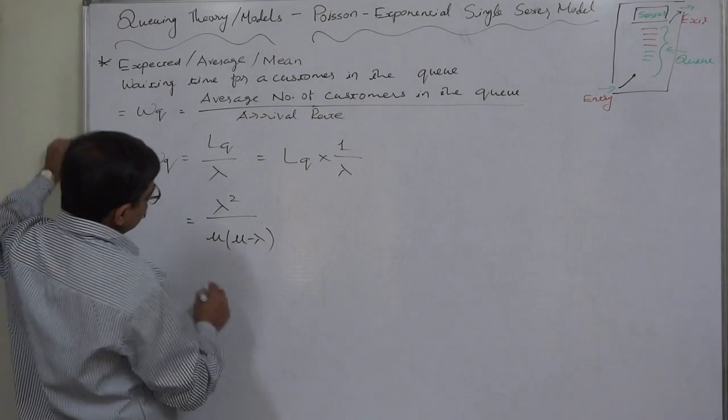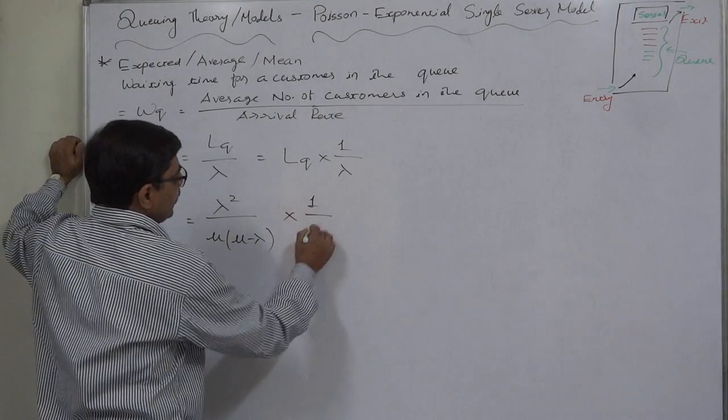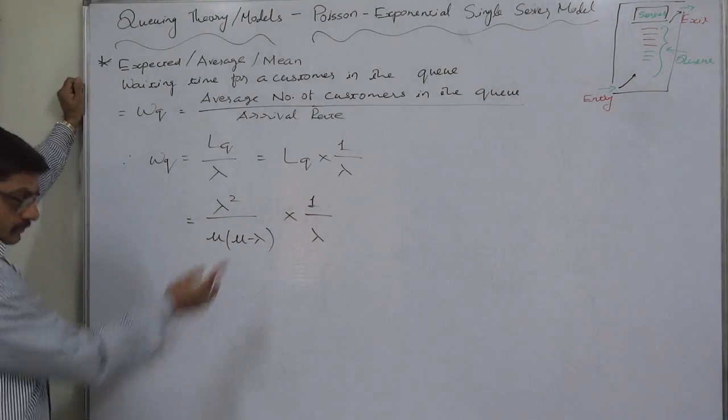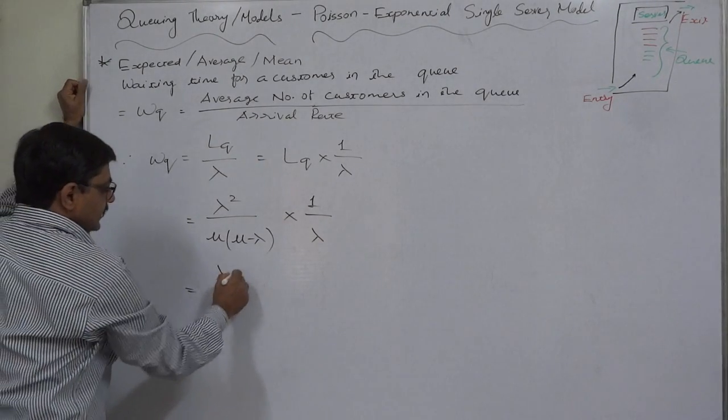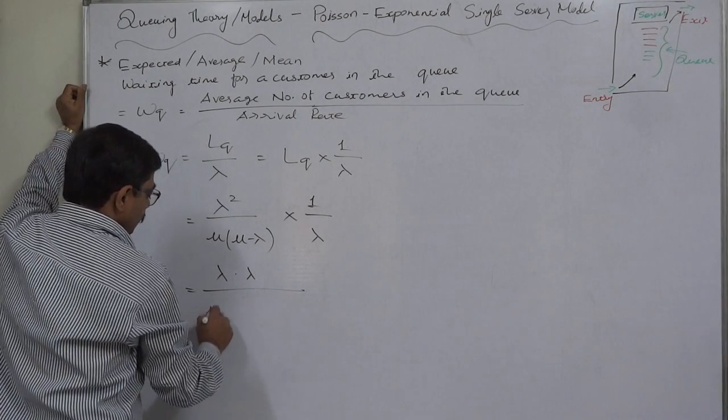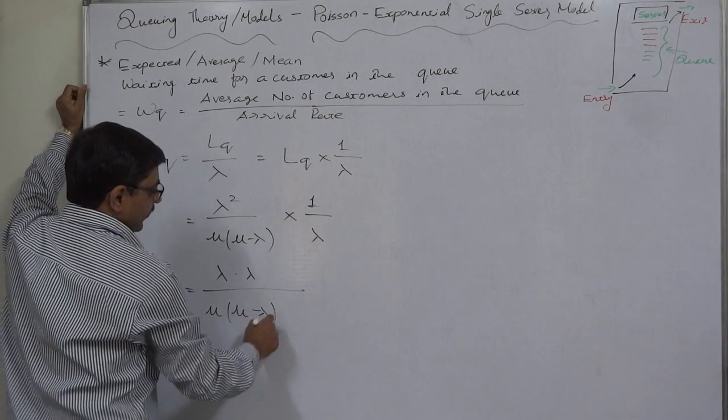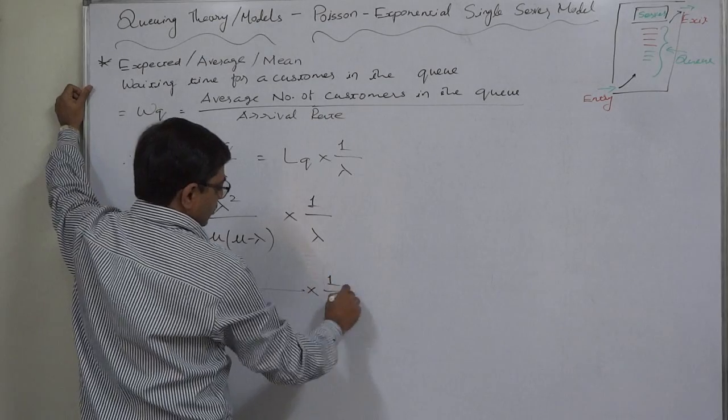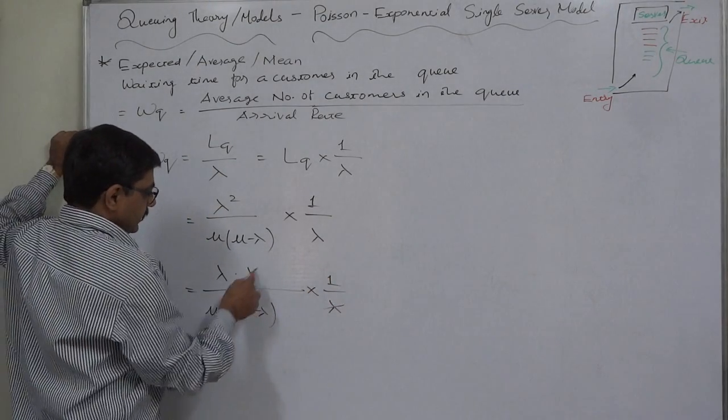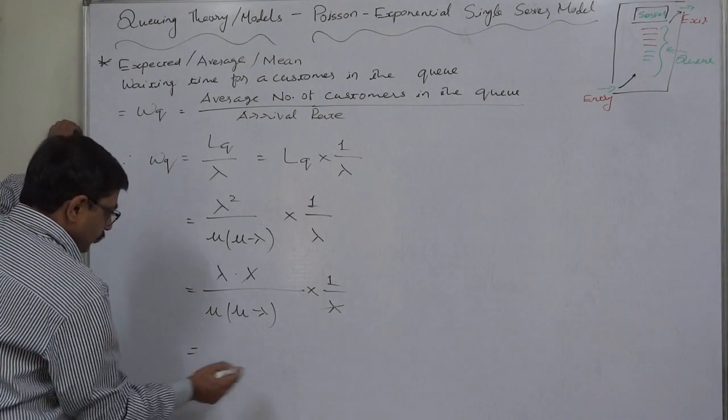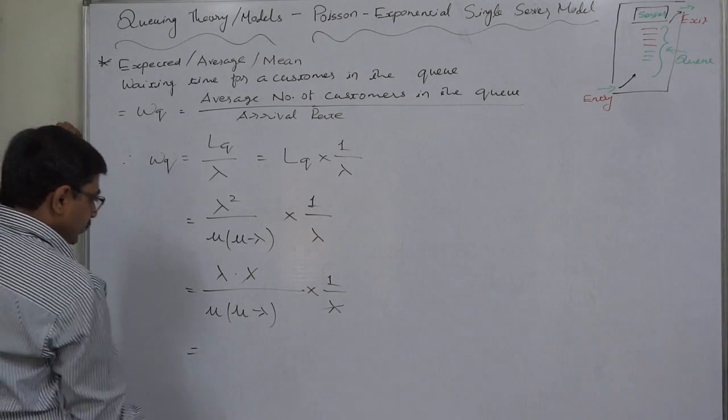Now we have to multiply it by one over lambda because we want to divide it by lambda, the arrival rate. Just one more step for simplification. We can cancel one of the lambdas from the numerator with this lambda in the denominator.